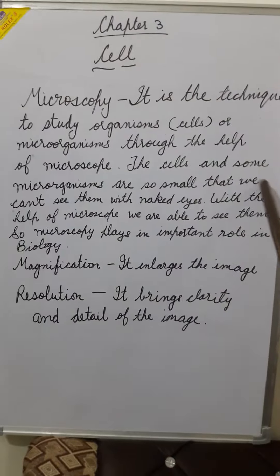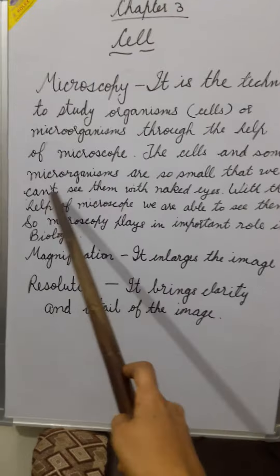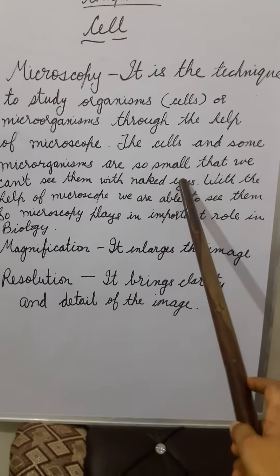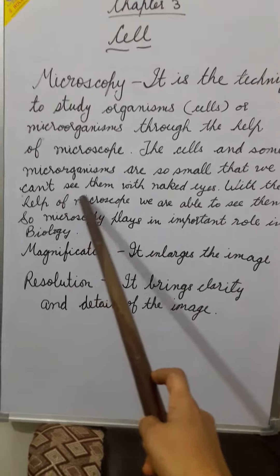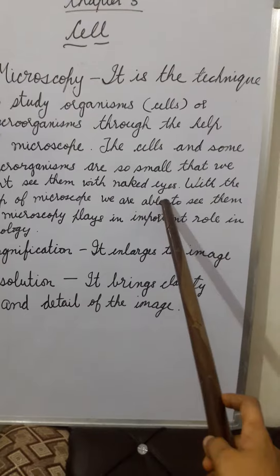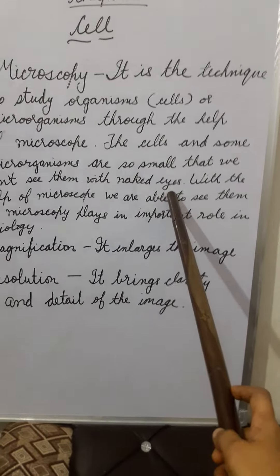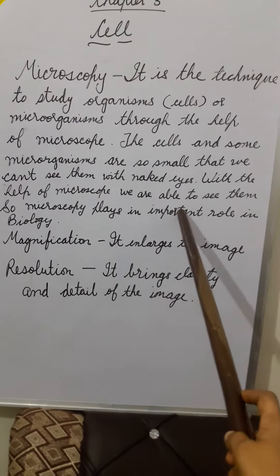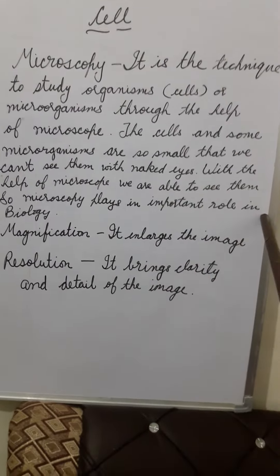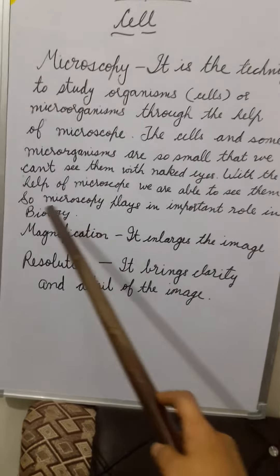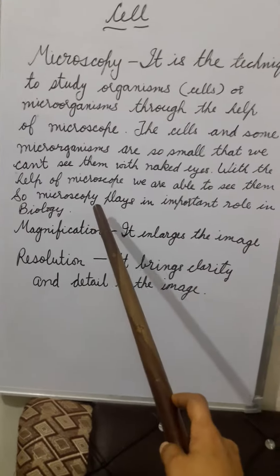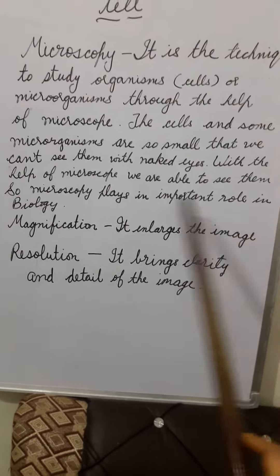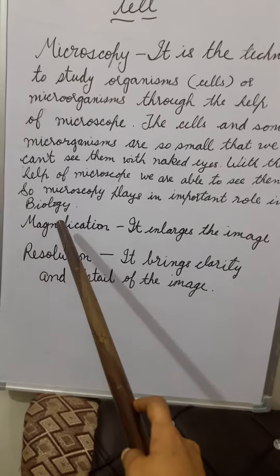The cells and some microorganisms are so small that we can't see them with the naked eyes. With the help of a microscope, we are able to see them. So microscopy plays an important role in biology.